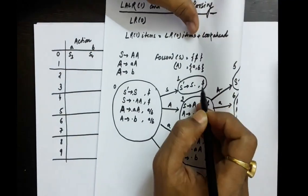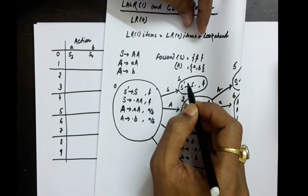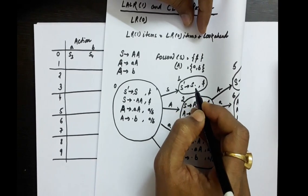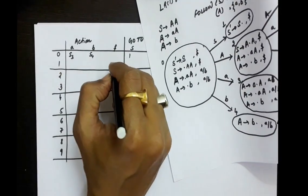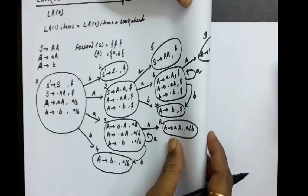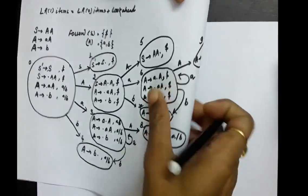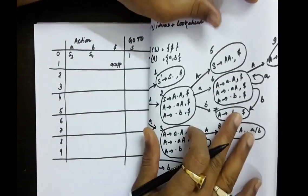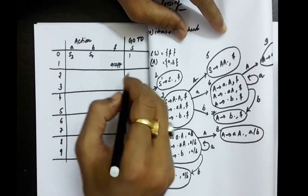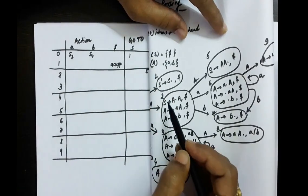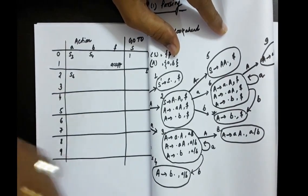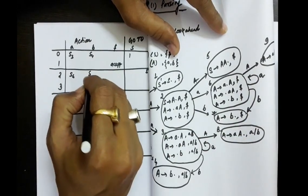From state 1, if we shift a dollar, it is like we have reduced the string to the start symbol and a dollar appears after that. So with 1 and dollar, we are going to accept. With 2 and capital A, you are going to state number 5. With 2 on capital A, going to state 6. With 2 with small a, S6. With 2 with small b, S7.